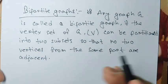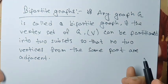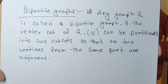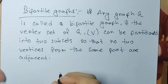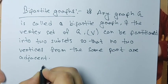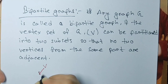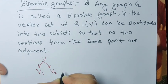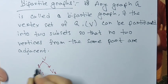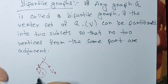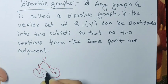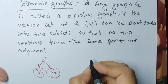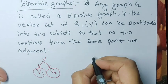Now we'll go through the definition of bipartite graphs. Any graph G is called a bipartite graph if the vertex set of G — denoted V — can be partitioned into two parts, say V1 and V2, so that no two vertices from the same part are adjacent. So no two vertices of V1 are adjacent and no two vertices of V2 are adjacent.